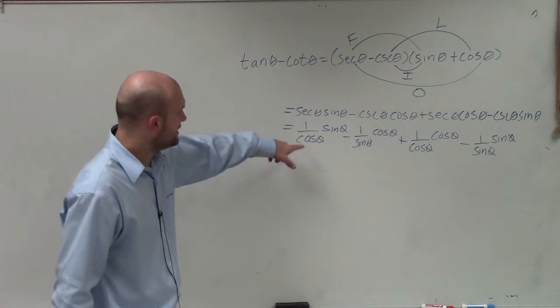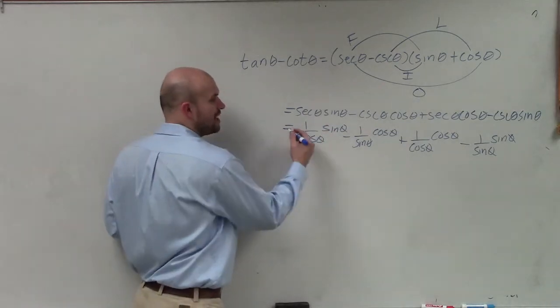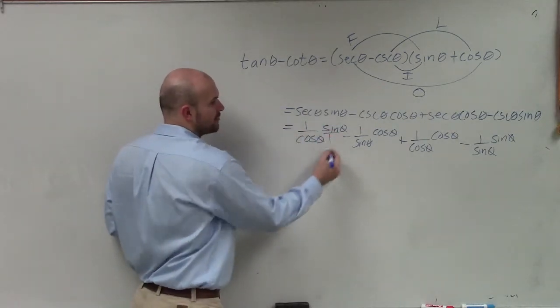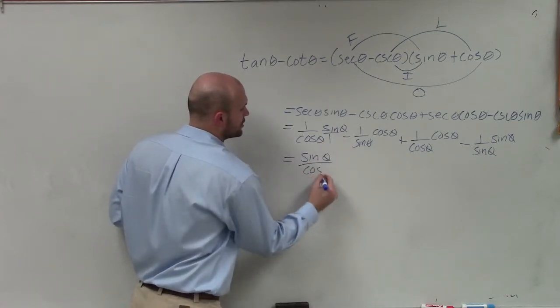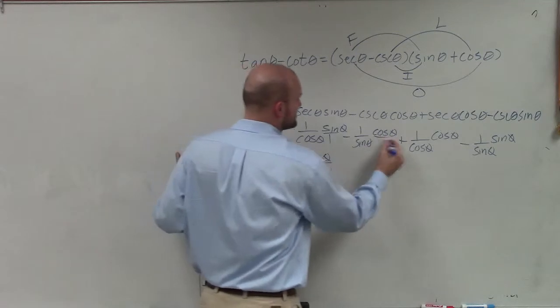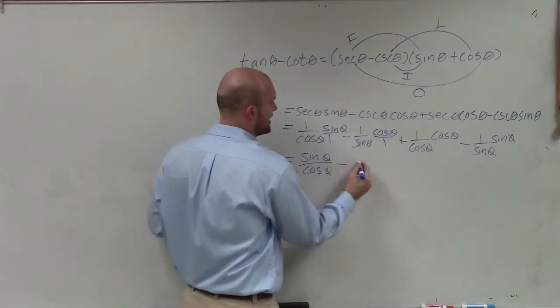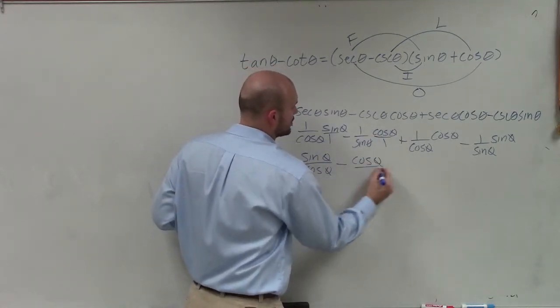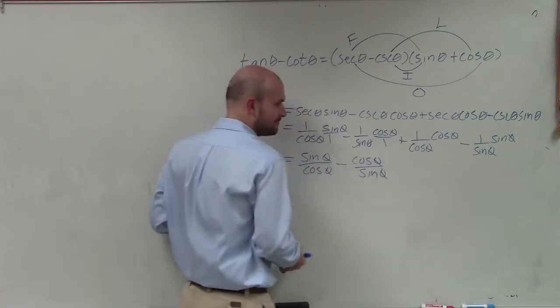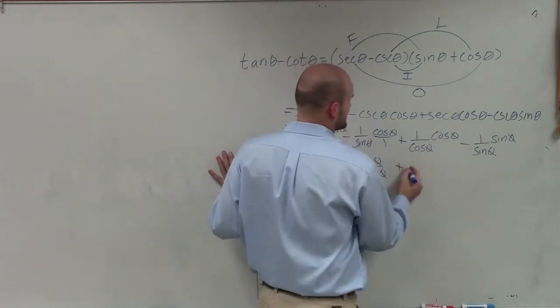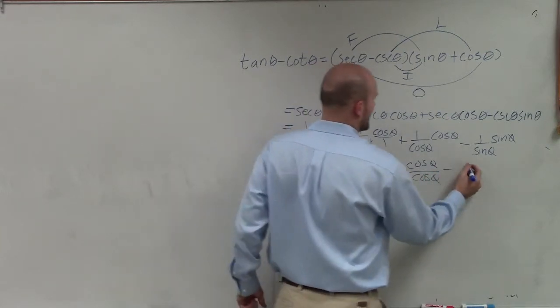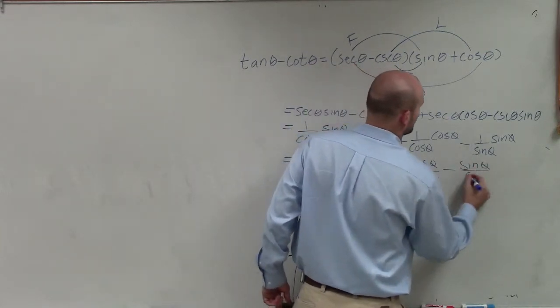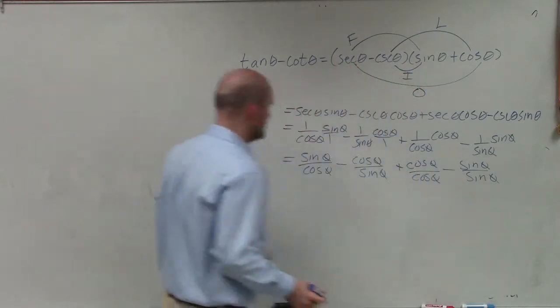Now, if you look over here, I have sine over cosine, right? If I multiply this cross, 1 over cosine times sine over 1, that's just going to be equal to sine of theta over cosine of theta. If I multiply these across, put that over 1, that's going to be minus cosine of theta over sine of theta. Over here, I multiply the cross, that's going to be cosine of theta over cosine of theta, and here I'm going to have sine of theta over sine of theta.